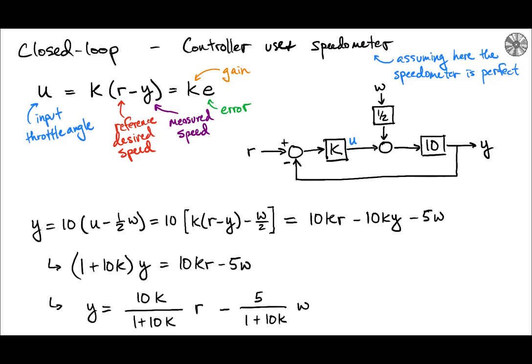So ideally we want y to be equal to the reference. We want our output speed to be what we want it to be, the reference. And so if 10k over 1 plus 10k is 1 then we've done that. And ideally we want the contribution to the disturbance w to be very small. We want it to be 0.